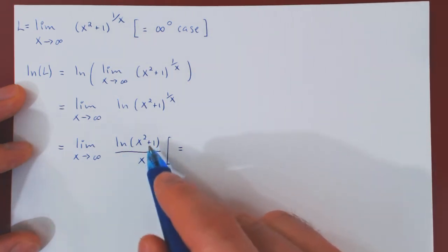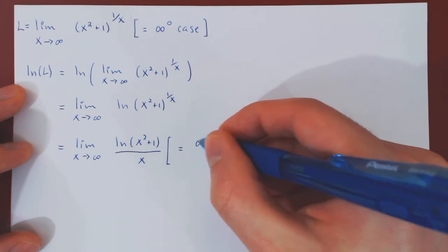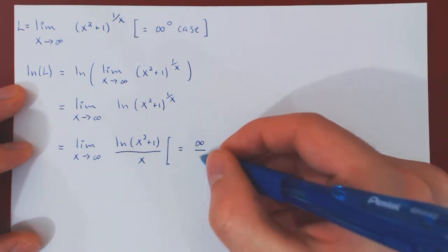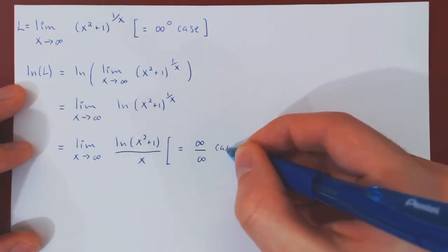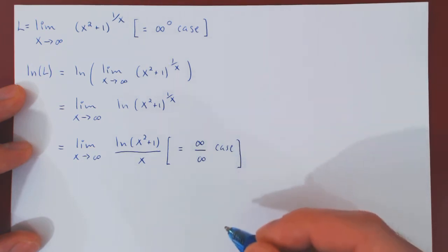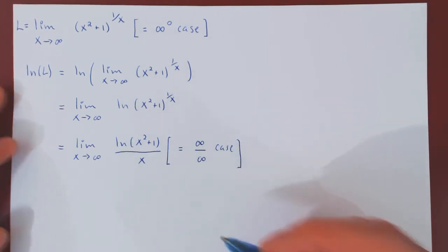As x tends to infinity, ln of x squared plus 1 tends to infinity over of course infinity. So we have an infinity over infinity case, we can now apply L'Hopital's rule.